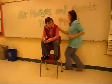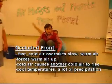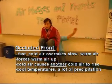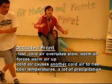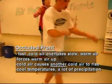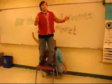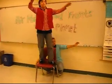Then we have our occluded front. An occluded front is when there's a cold air mass which moves off to the side, causing the warm air mass to push up, and that usually brings cold temperatures and large amounts of precipitation.